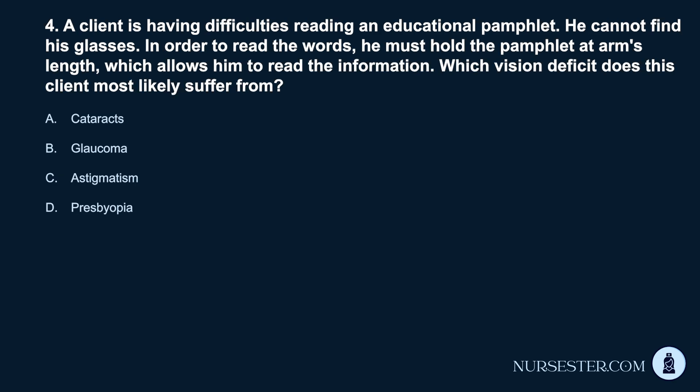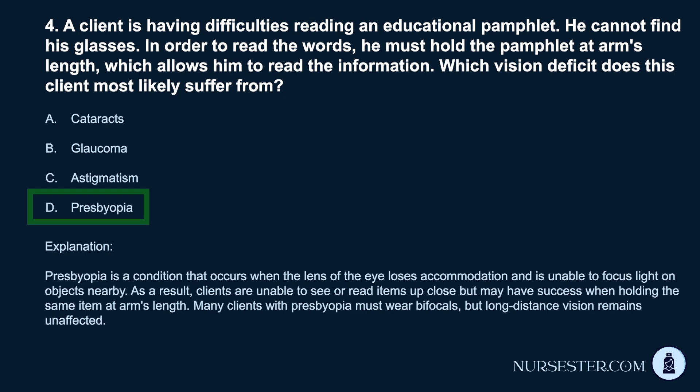Question 4. A client is having difficulties reading an educational pamphlet. He cannot find his glasses. In order to read the words, he must hold the pamphlet at arm's length, which allows him to read the information. Which vision deficit does this client most likely suffer from? a. Cataracts. b. Glaucoma. c. Astigmatism. d. Presbyopia. Correct answer: d. Presbyopia. Presbyopia is a condition that occurs when the lens of the eye loses accommodation and is unable to focus light on objects nearby. Clients are unable to see or read items up close but may have success when holding the same item at arm's length. Many clients with presbyopia must wear bifocals, but long-distance vision remains unaffected.